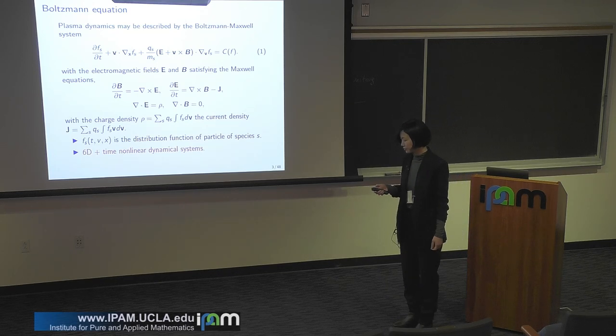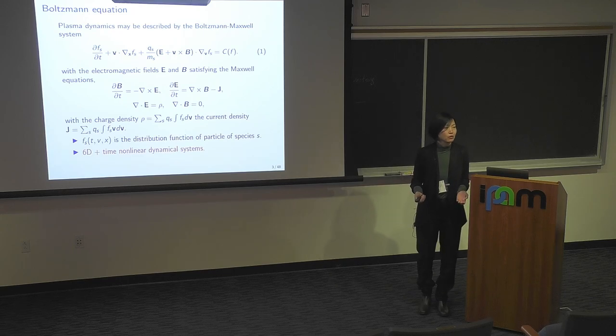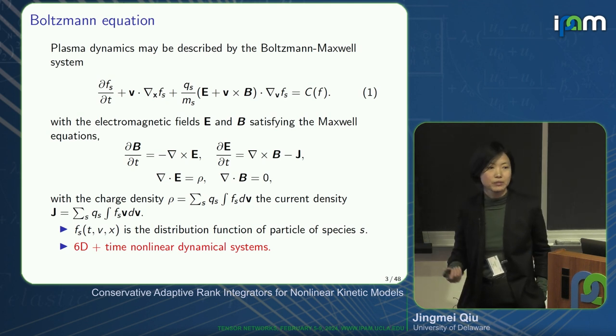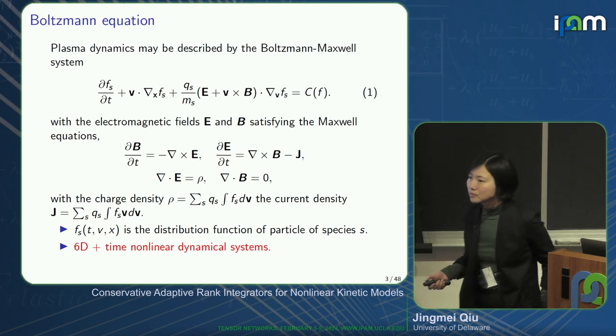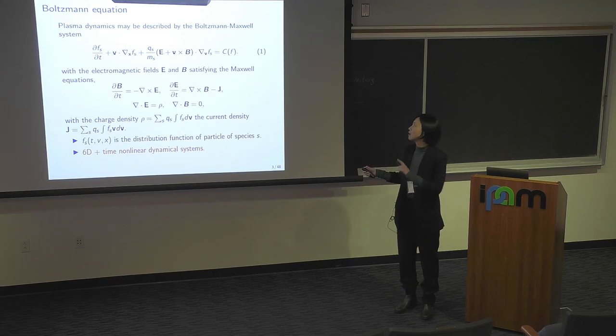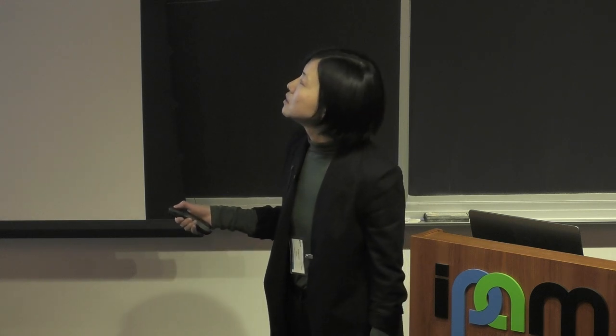The C(f) term is the collisional term — it describes particle collisions, such as the Fokker-Planck operator or different types of Boltzmann collisional operators. Physically, it captures how particles collide with each other and the probability of those collisions, giving the rate of change of the probability density for different particle species. We have applied the nonlinear Fokker-Planck operator here, though nonlinearity can also be treated through some type of linearization.